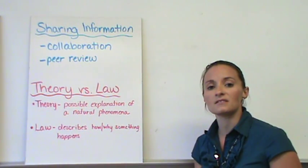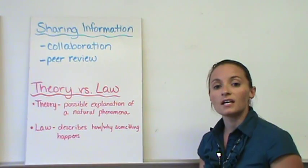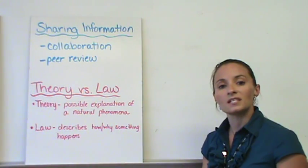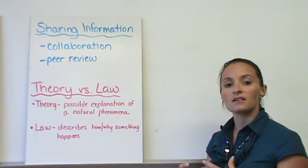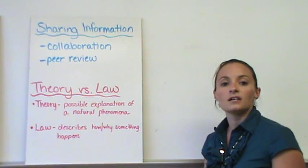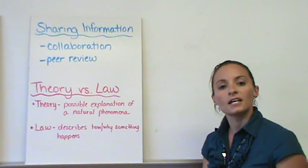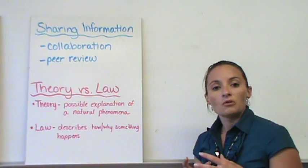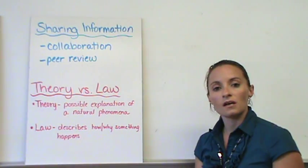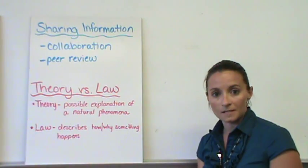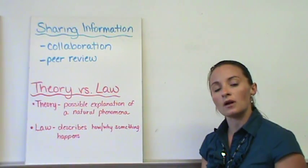The second reason scientists do a lot of sharing is what's called peer review. And peer review actually helps to keep scientists in check with their information, with their research, and with what they're trying to do. Peer review takes a look at a scientifically written paper. So a scientist runs an experiment, and then they want to publish that experiment. In a peer review process, they would submit their paper.